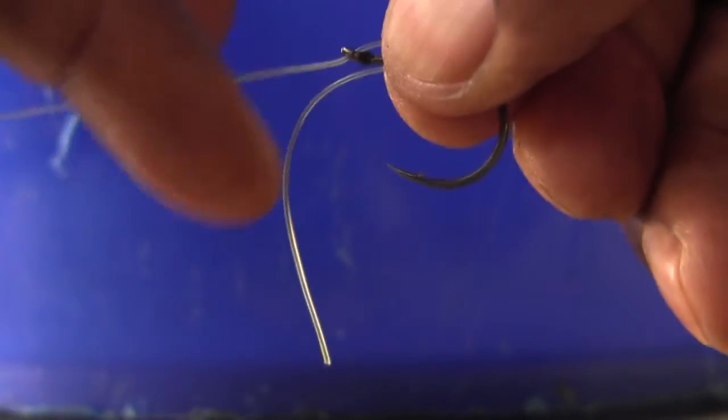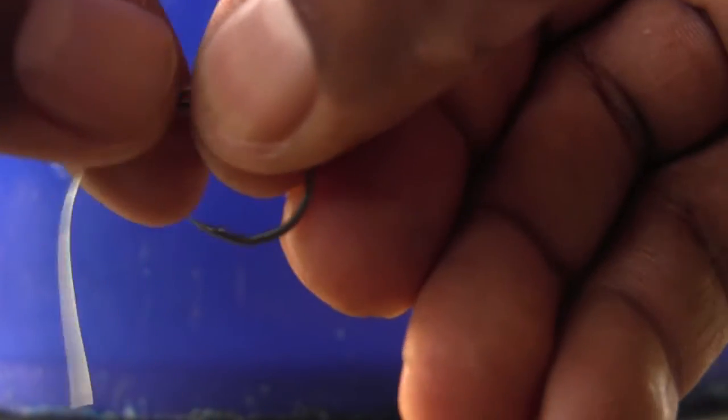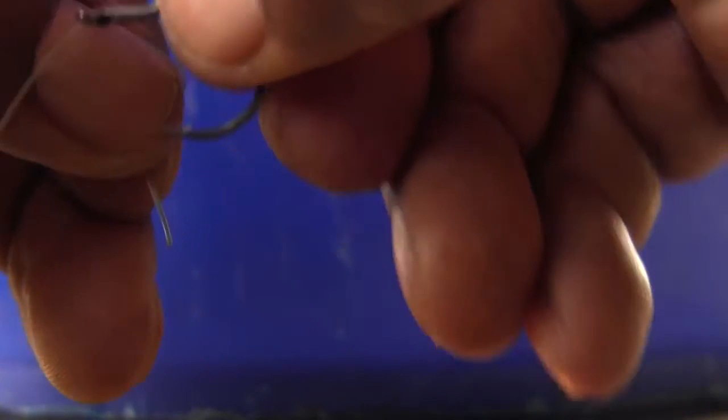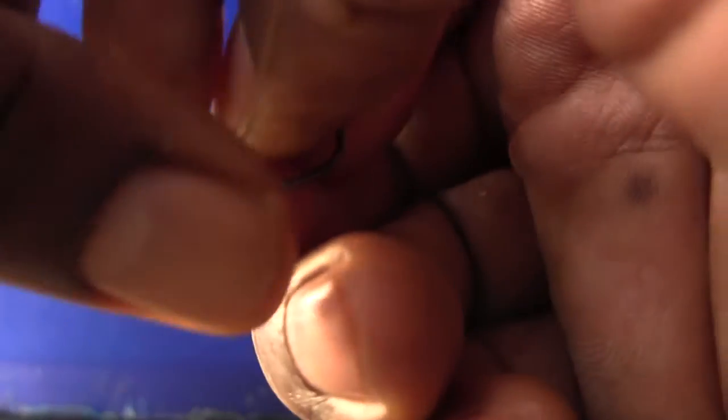There's my little tag end in there. So I'm going to take this little end here and make sure I have plenty of room to work. I'm going to take this little end that's loose and wrap that around my hook here about five times.